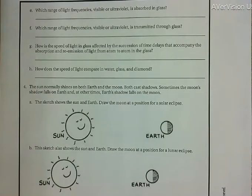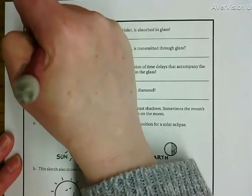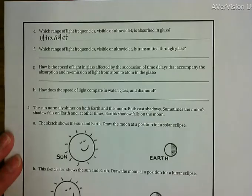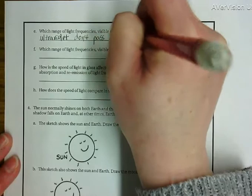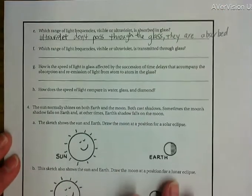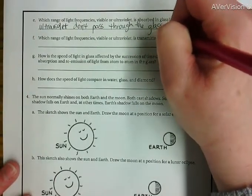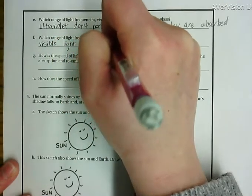Letter E: which range of light frequencies — visible or ultraviolet — is absorbed by glass? Absorbed means it can't get through, and that is the ultraviolet. That's why you don't get a sunburn sitting behind glass even on a sunny day — those ultraviolet rays can't pass through. Letter F: visible light is the range that is transmitted through glass.